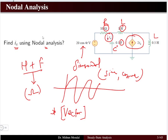We have to solve the problem using nodal analysis. In nodal analysis the unknown variables are the node voltages — V1 and V2 in this case — with the reference node at 0 volts.